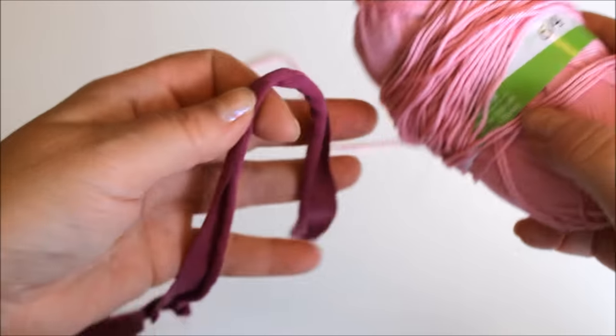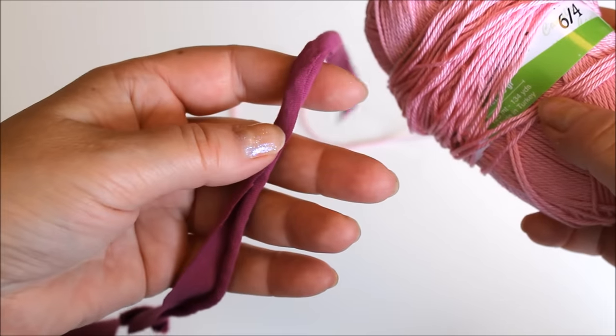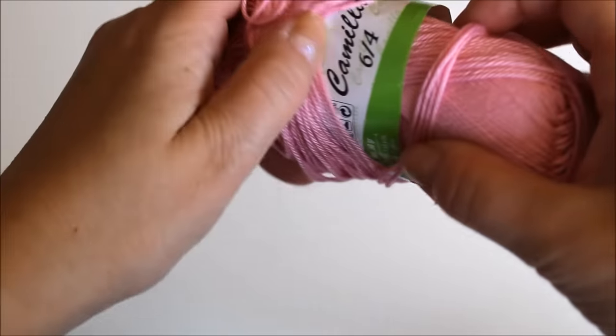So you need a t-shirt yarn. I've cut this myself but you can buy it, and then some sort of cotton that you are going to crochet together with.